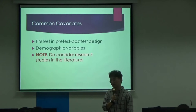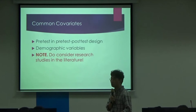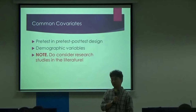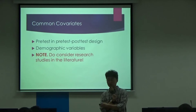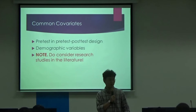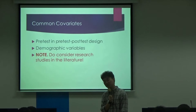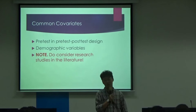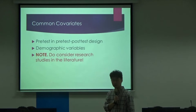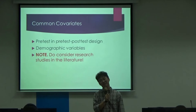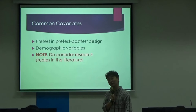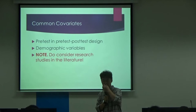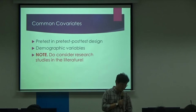I want to reiterate that when we are considering a covariate or several covariates, we really need to consider the literature. Some publications will have statistical analysis showing differences on the covariate. But I really want you to take into account the literature when considering covariates - it is not a decision made based on statistical analysis alone. Think about theories or literature that help you decide whether you need a covariate.